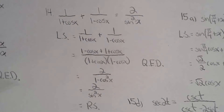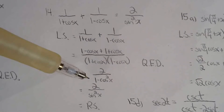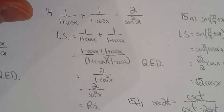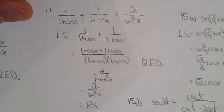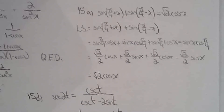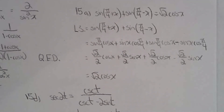Question 14 is a great Grade 11 question but not so much for Grade 12 — just simplify and apply the Pythagorean identity: 1 minus cosine squared x equals sine squared x.